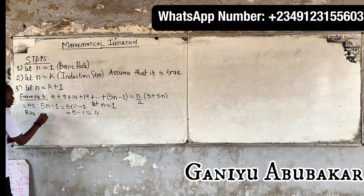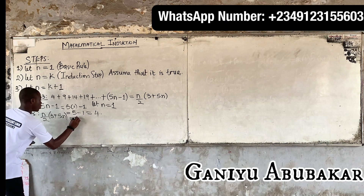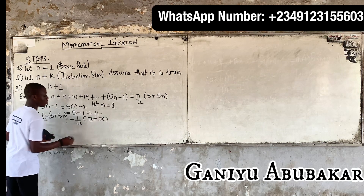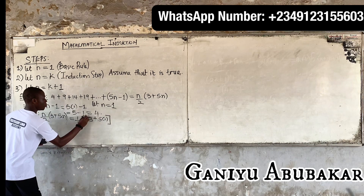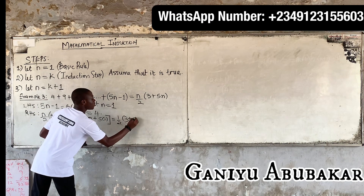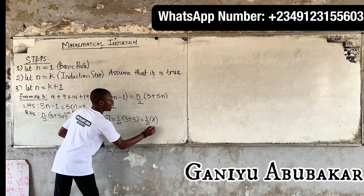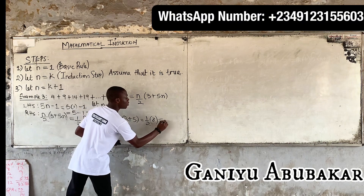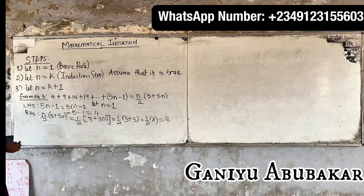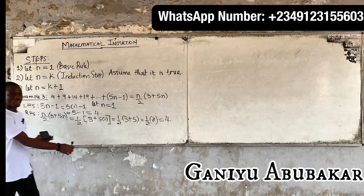Now for the right hand side: n(n) over two, times the bracket three plus five n. Put n as one — that's one over two, times three plus five times one. That becomes one-half times eight, which equals four. So the left hand side equals the right hand side, both equal four.